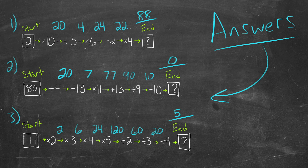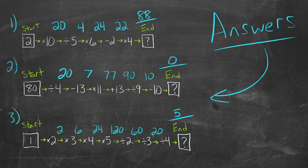...90, divided by 9 is 10, minus 10 gives us zero. And then for number three, we start with 2 — times 3 is 6, times 4 is 24, times 5 is 120, divided by 2 is 60, divided by 3 is 20, divided by 4 gives us 5.